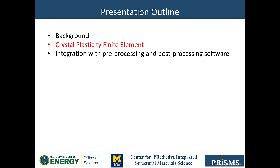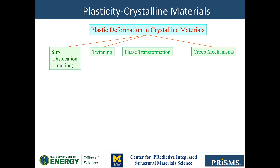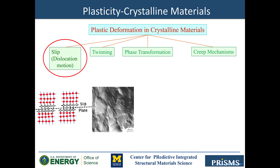Let's briefly go over the Crystal Plasticity Finite Element method. There are different deformation mechanisms which induce plasticity in crystalline metals: slip, twinning, phase transformation, and creep. Slip is the result of dislocation glide — in other words, plastic deformation due to slip is the result of successive sliding of one layer of atoms over another, which occurs in a specific crystallographic direction and plane, commonly called the slip direction and slip plane. These two form a slip system.